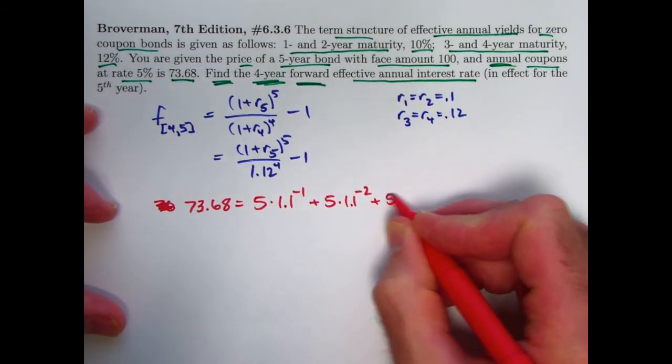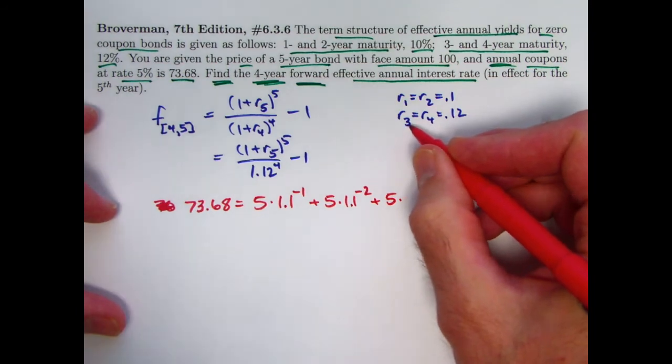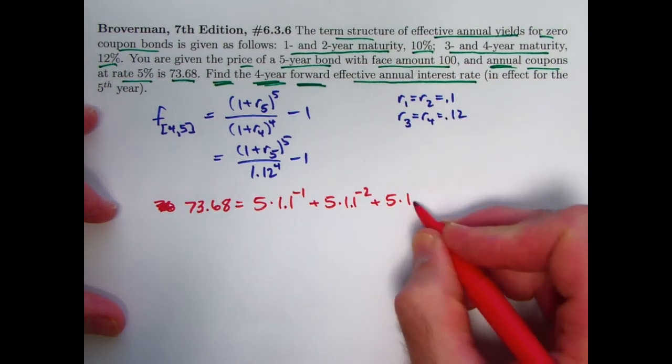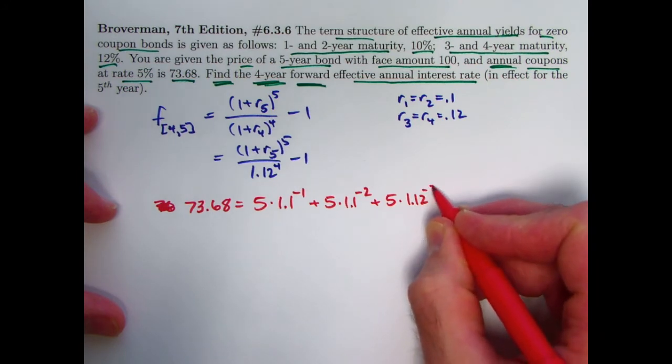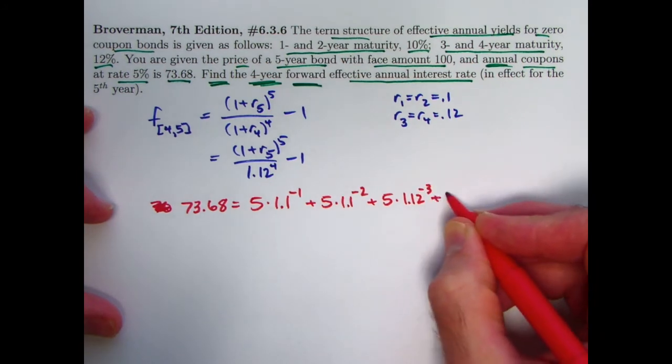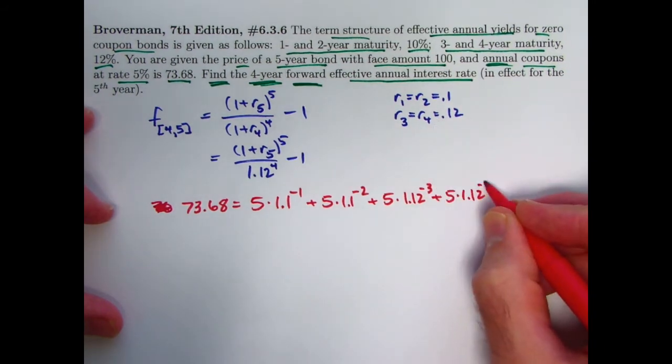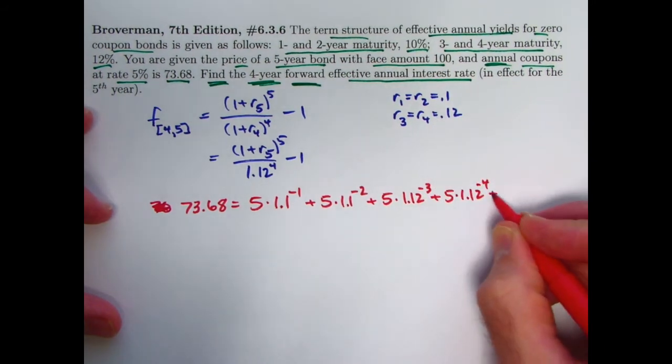The third coupon uses the spot rate R3, not R1 or R2. It uses 0.12. 1.12 needs to be raised to the negative 3 power. The fourth takes 1.12 because that's the value of R4 to the negative 4 power.